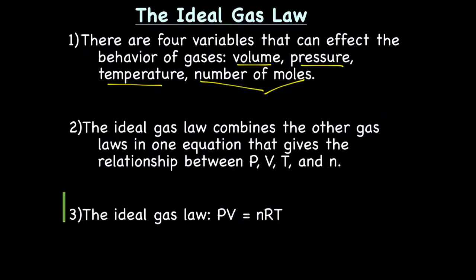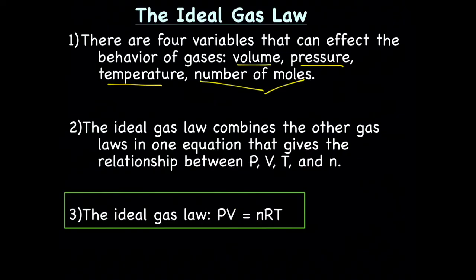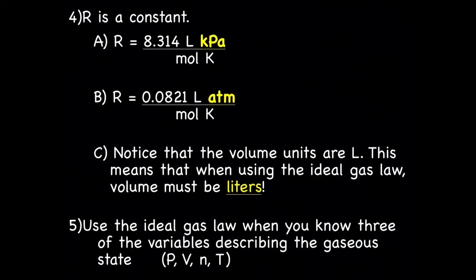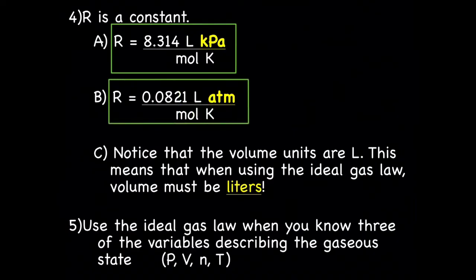And this is the ideal gas law: PV equals nRT. Now I just told you there were four variables and there are five letters. That's because R is not a variable, it's a constant. R is a constant. We have two different versions of R here: R equals 8.314 liters kPa per mole K, and R equals 0.0821 liters atm per mole K.